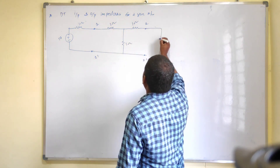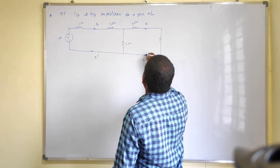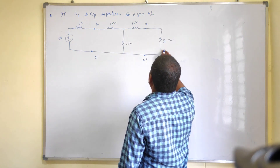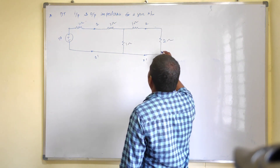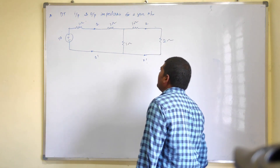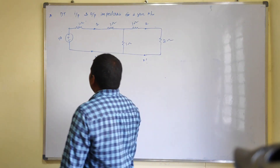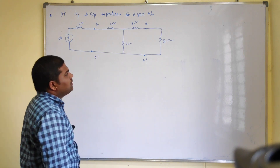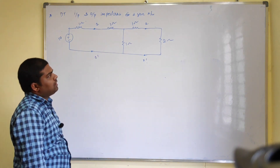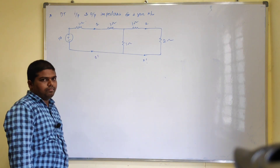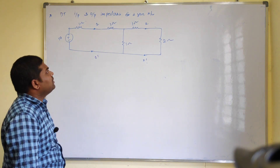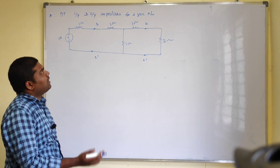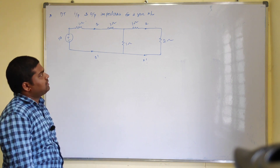We have the load resistance equal to two ohms. So this is your circuit diagram. For this circuit, you need to calculate input and output impedance.